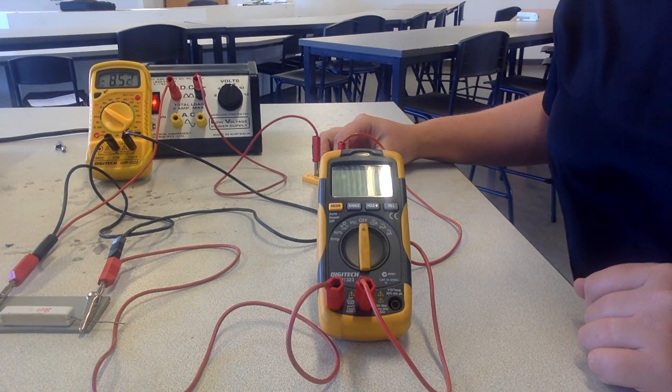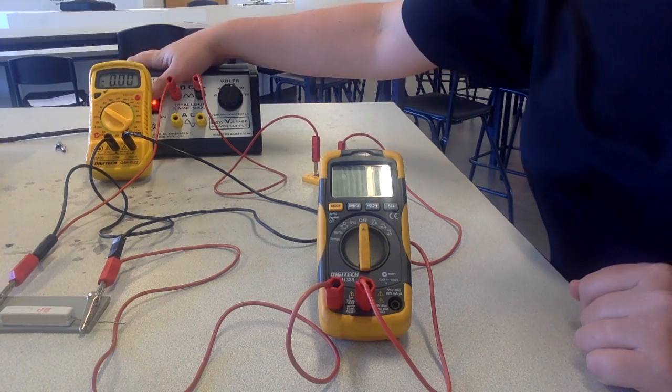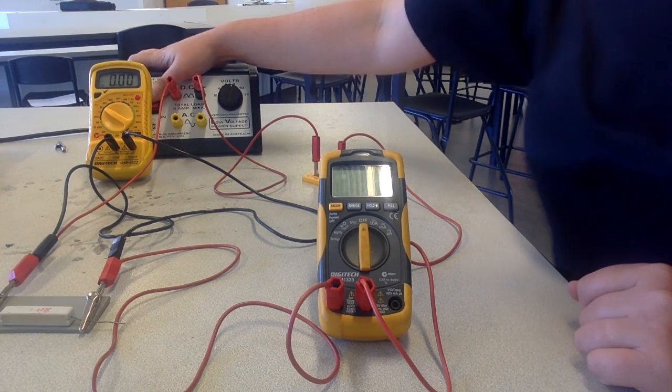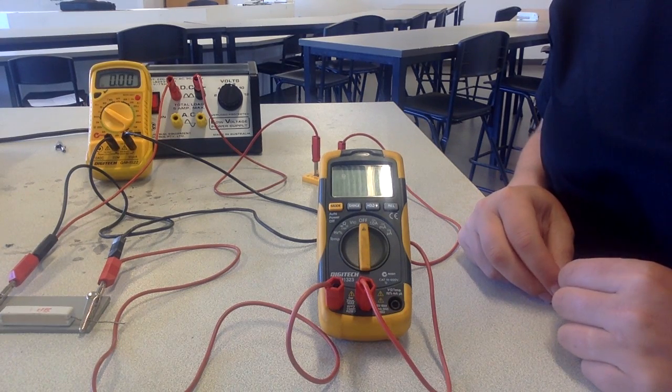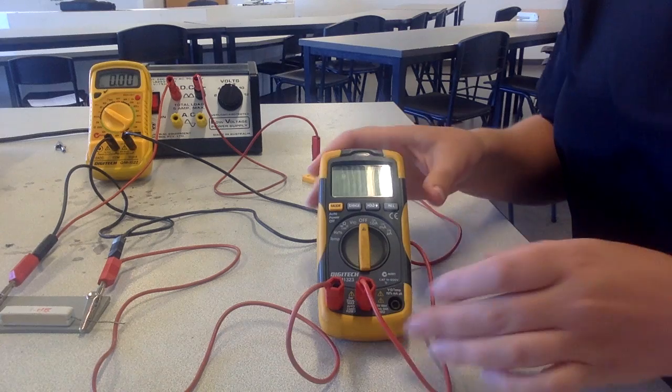Don't forget you've got to use the switch. And then if you're a really good scientist you might do the experiment again or even three times so you can get an average and take out any anomalies.